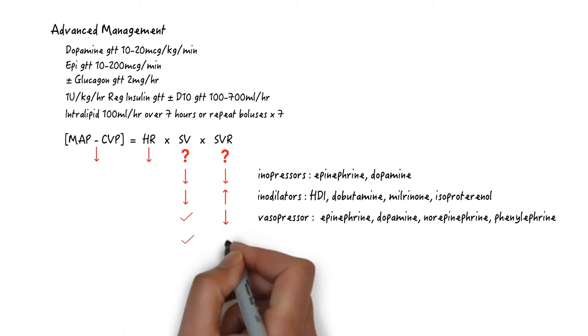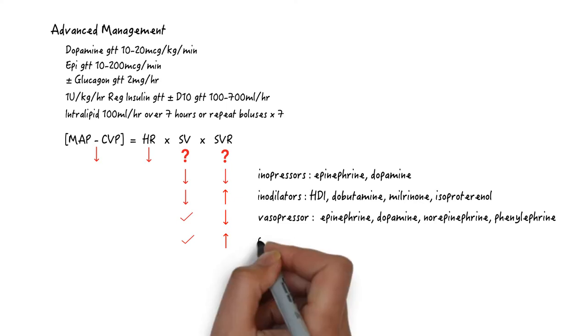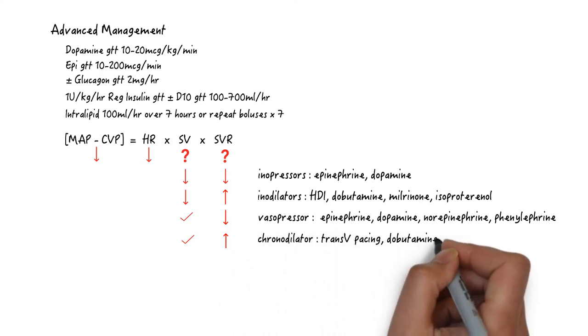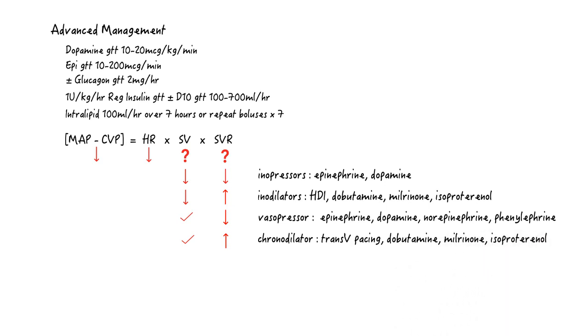The fourth scenario is that the stroke volume is okay, but the SVR is very high. This means that the bradycardia is purely responsible for hypotension and you will need a chronodilator. Consider transvenous pacing if there is low likelihood of digoxin overdose. Dobutamine, milrinone, and isoproterenol can help in these cases.